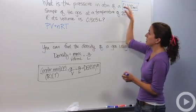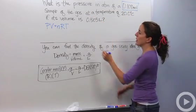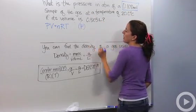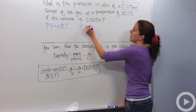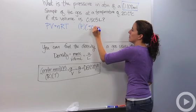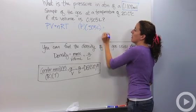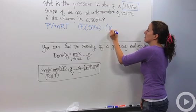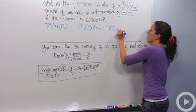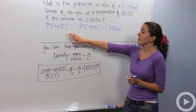So our pressure in this case, we're looking for it. So I'm going to say pressure is a variable. Our volume in this case is 0.505 liters. The number of moles we found is 0.108 moles.